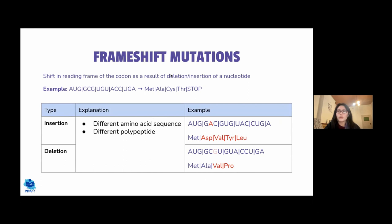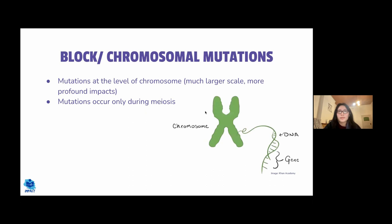Frameshift mutations involve the insertion or deletion of a nucleotide. After the insertion or deletion, the entire downstream DNA sequence is changed, so all amino acids after the mutation will be different from normal, resulting in a different amino acid sequence and a different polypeptide.